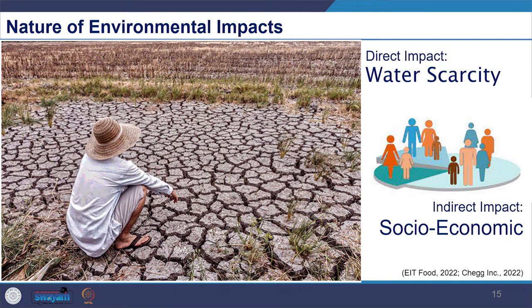We can also think of water withdrawal by an industry, which may directly impact the biophysical environment like lowering the water level. This indirect socio-economic influence — the lowering of the water level — may lead to the lowering of the harvest level of the farmers in the influence area.